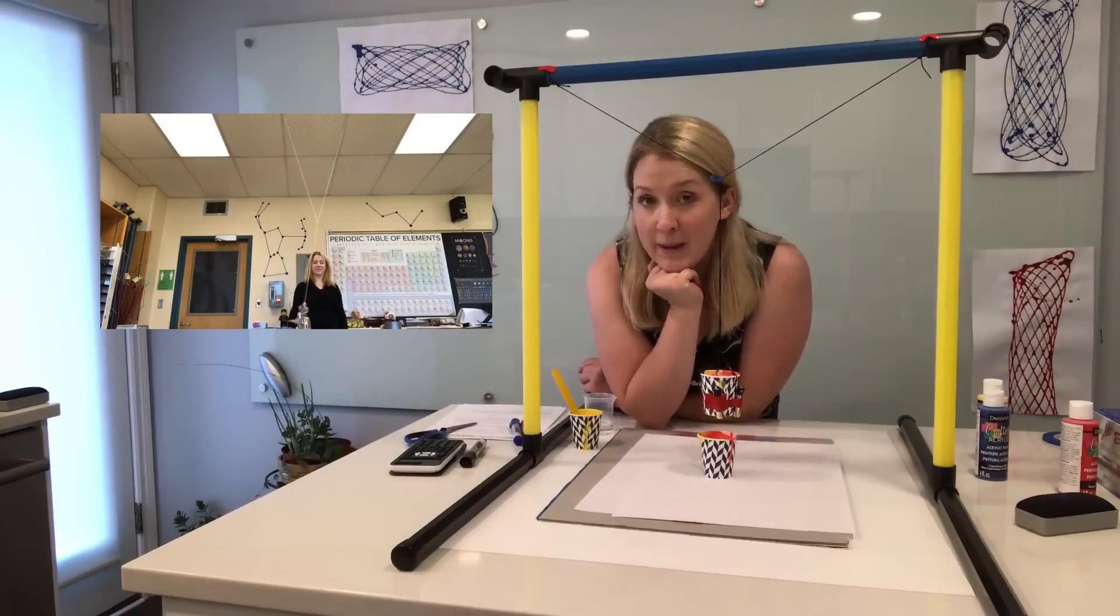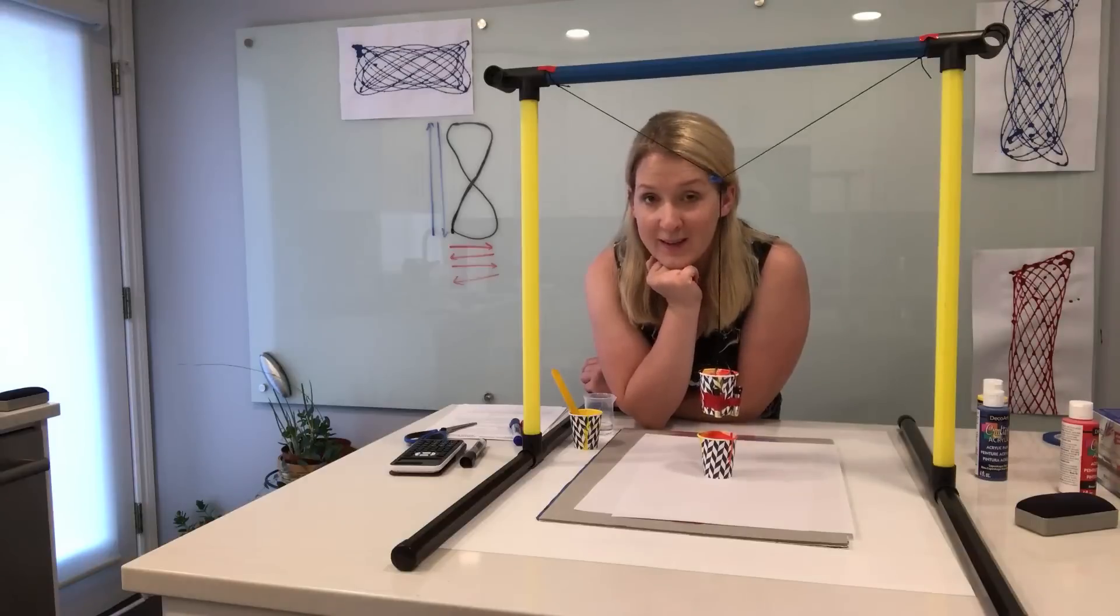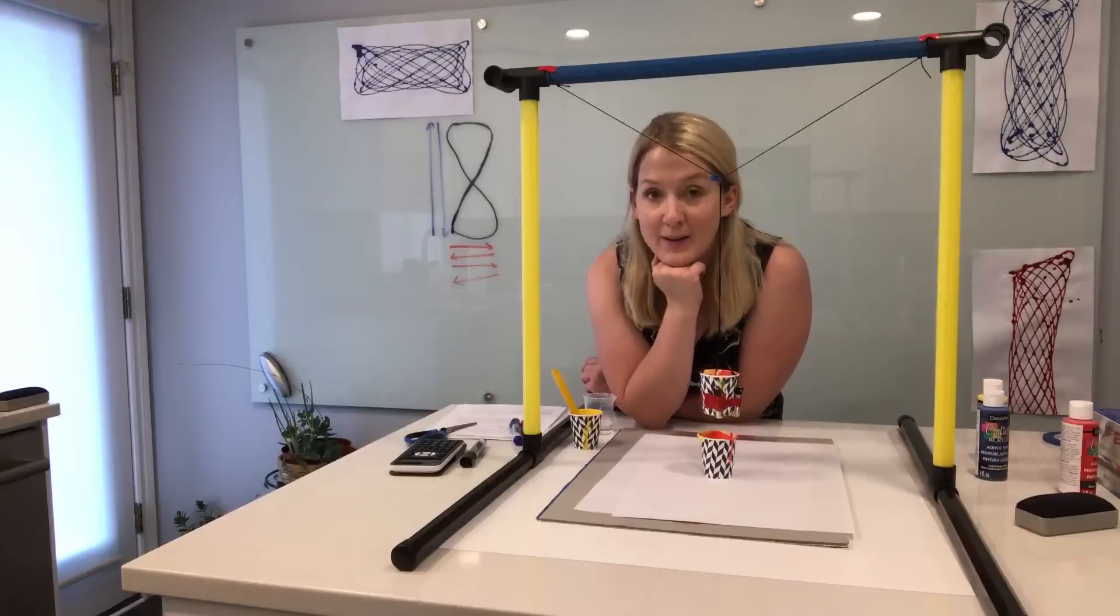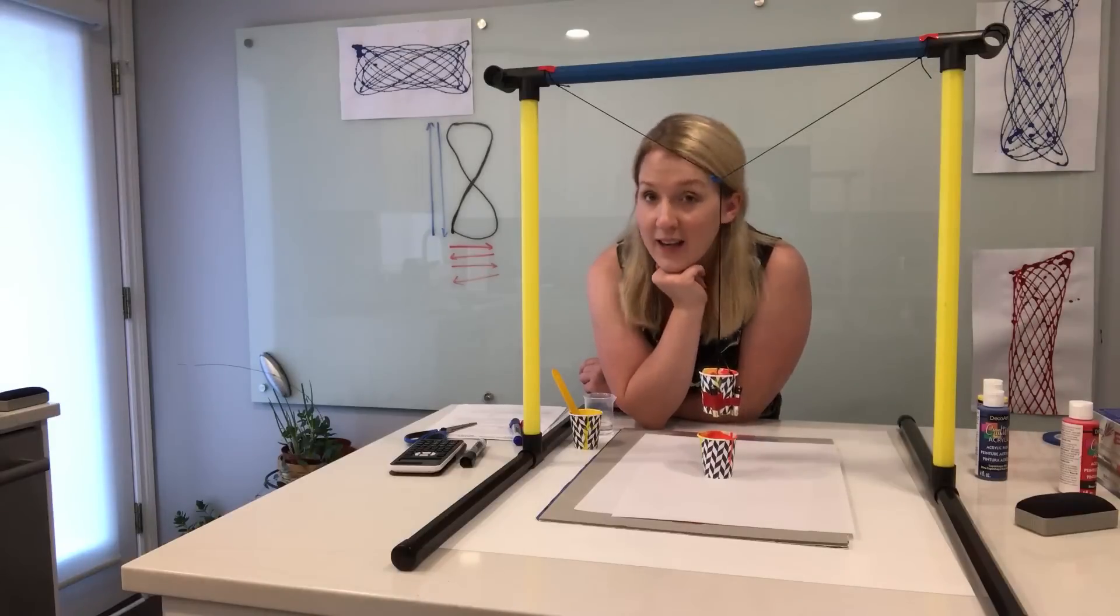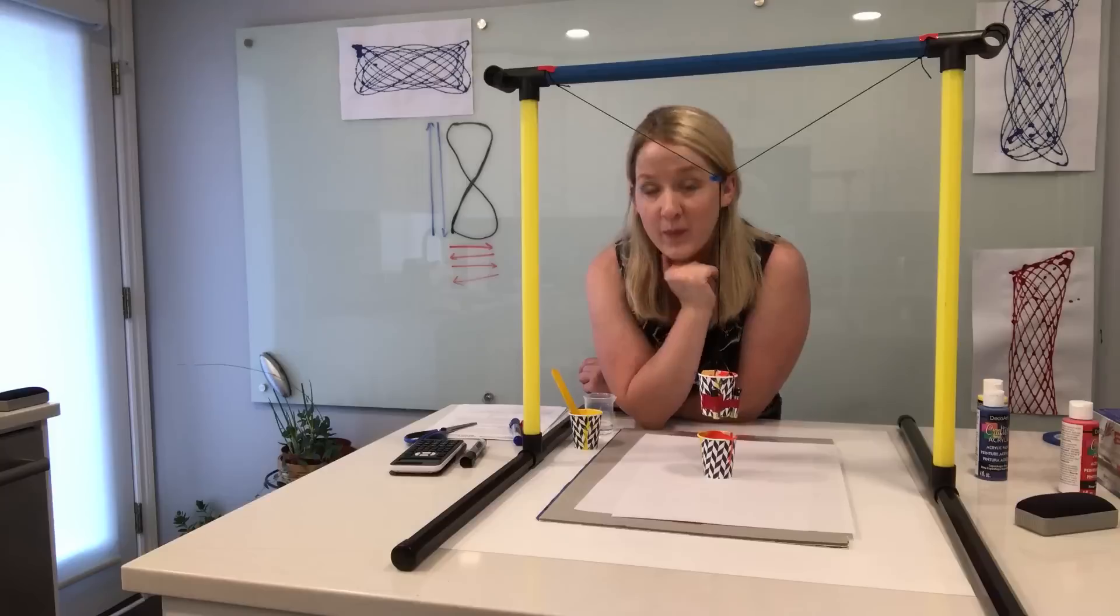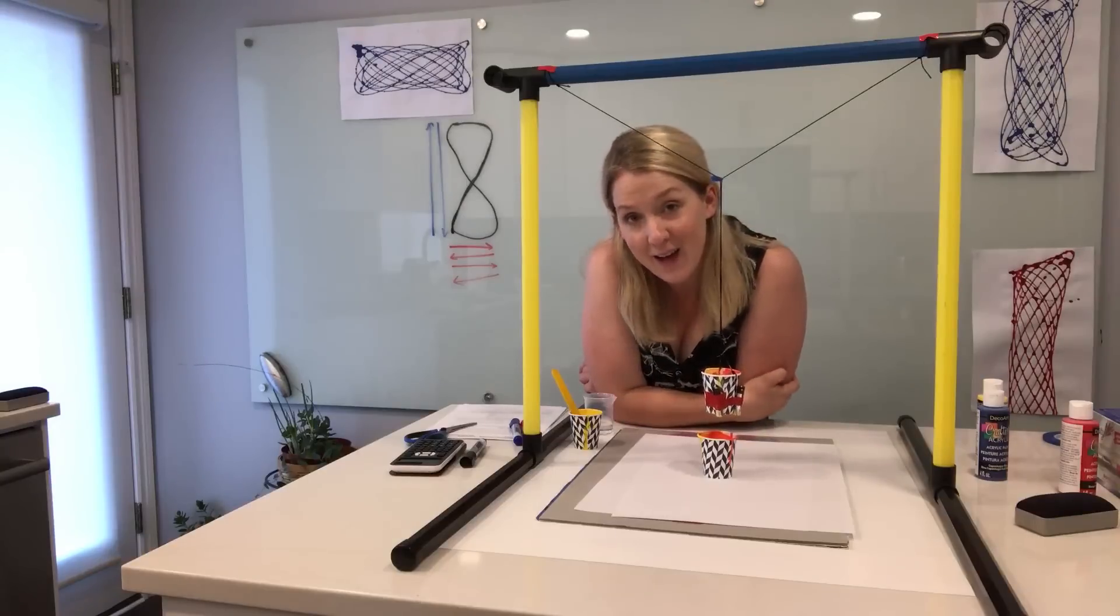And then I had the students go through and instead of cups, they had masses. And then the students would calculate the period in the X and Y directions and then find the ratio. And then we replaced the masses with the cups full of paint. And then they could actually see the Lissajous patterns created. Now that was a lot of work for me to do to calculate everything, cut everything, set everything up, have them figure out the ratios and then have them paint. That was a lot of work.